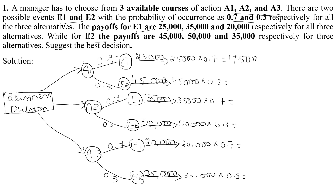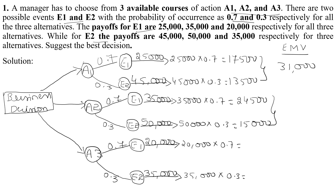Calculating the expected monetary values: For A1, 25,000 × 0.7 = 17,500 and 45,000 × 0.3 = 13,500, giving a total of 31,000. For A2, 35,000 × 0.7 = 24,500 and 50,000 × 0.3 = 15,000, giving a total of 39,500. For A3, 20,000 × 0.7 = 14,000 and 35,000 × 0.3 = 10,500, giving a total of 24,500.